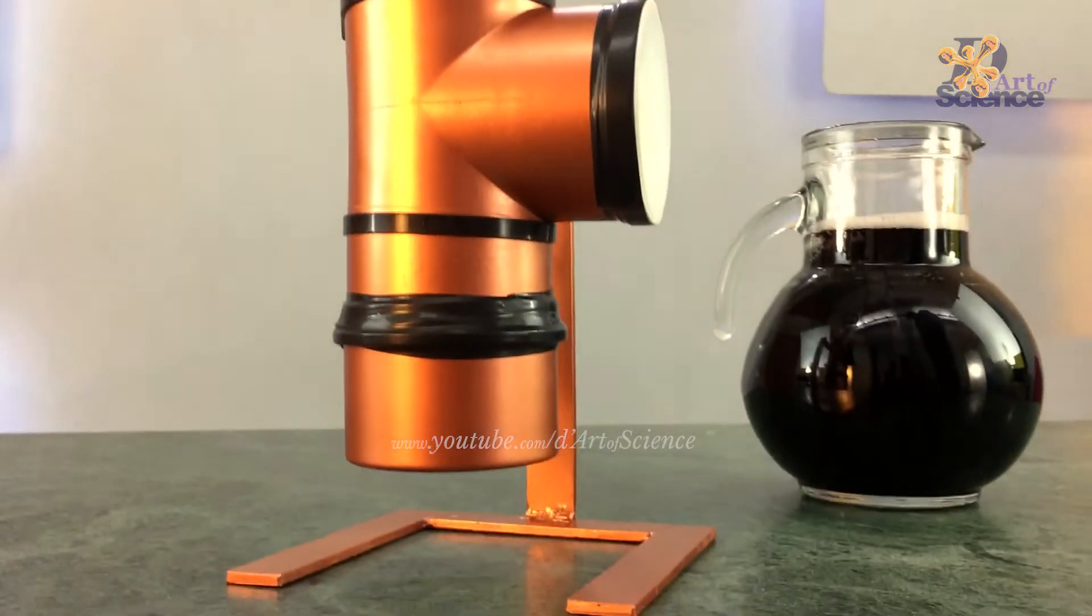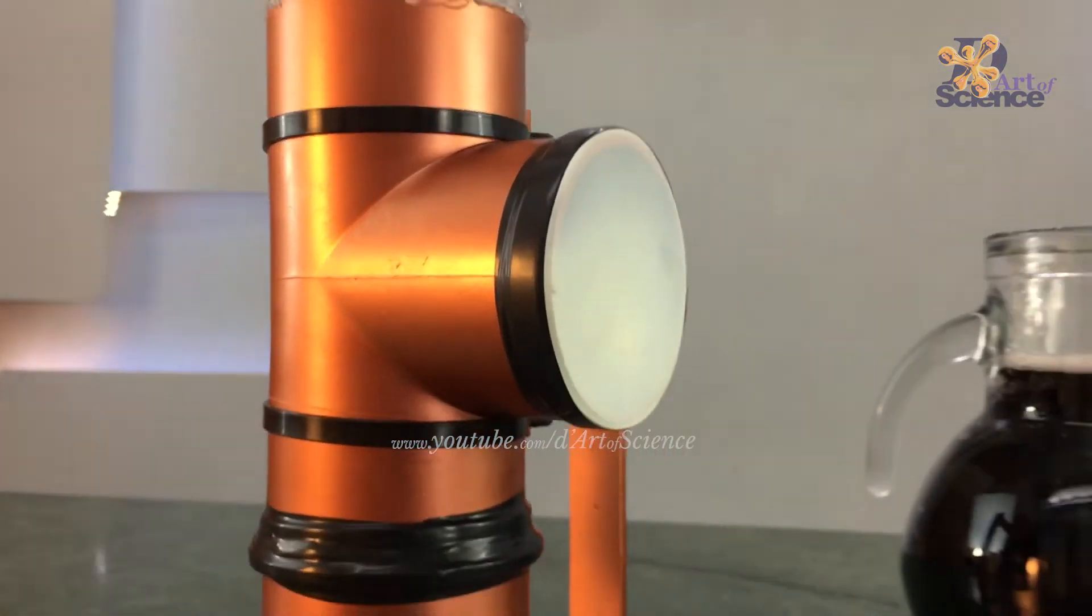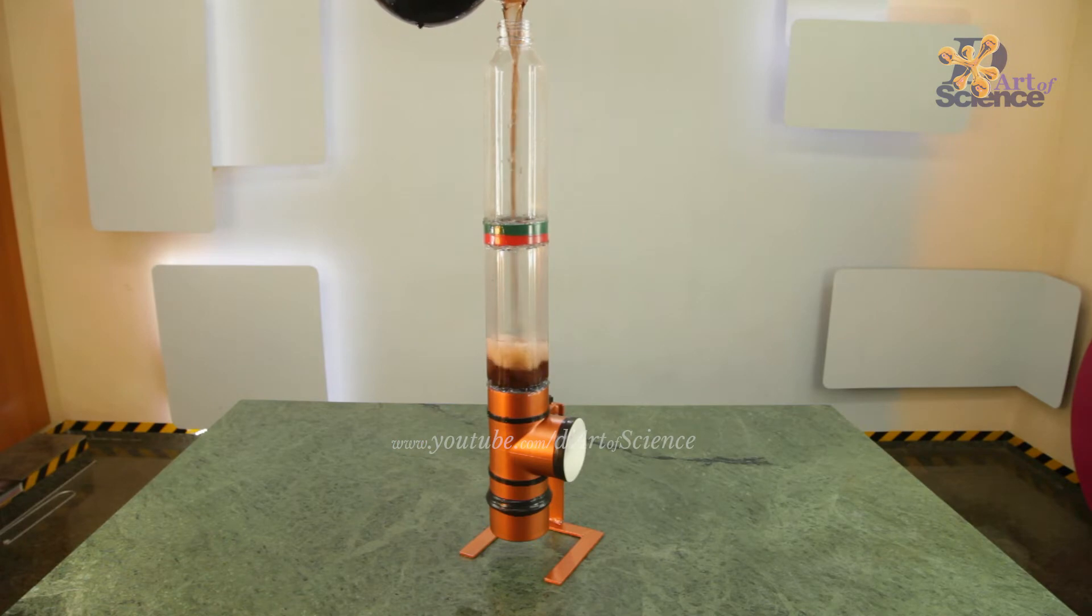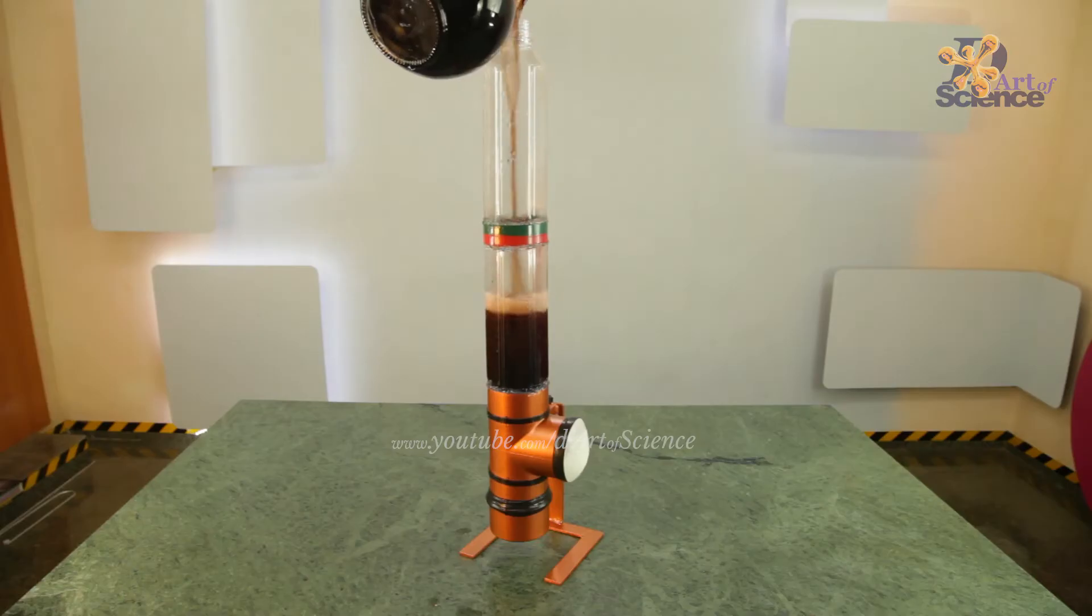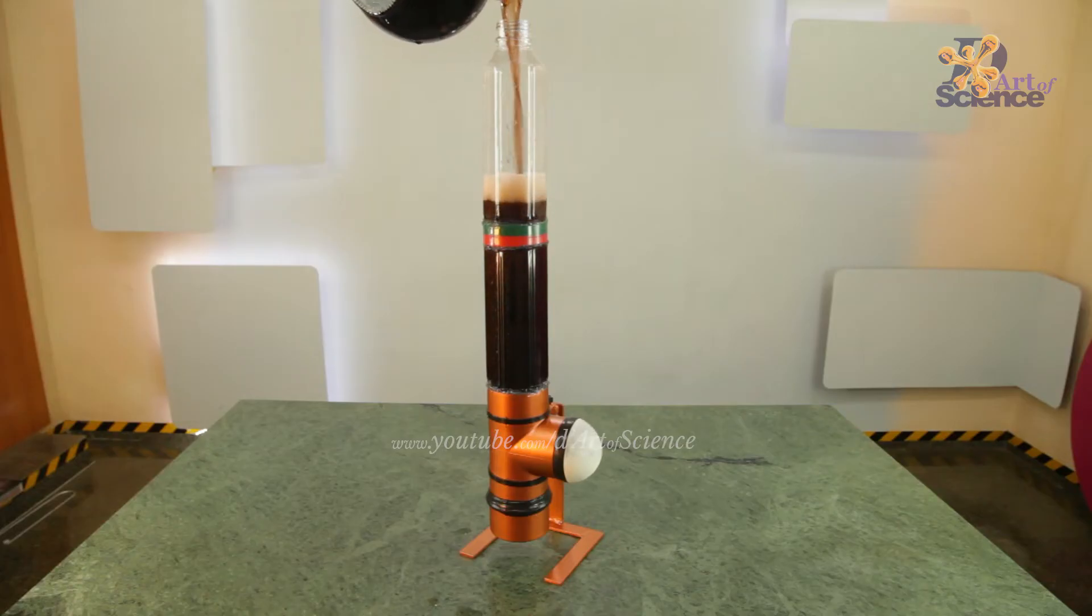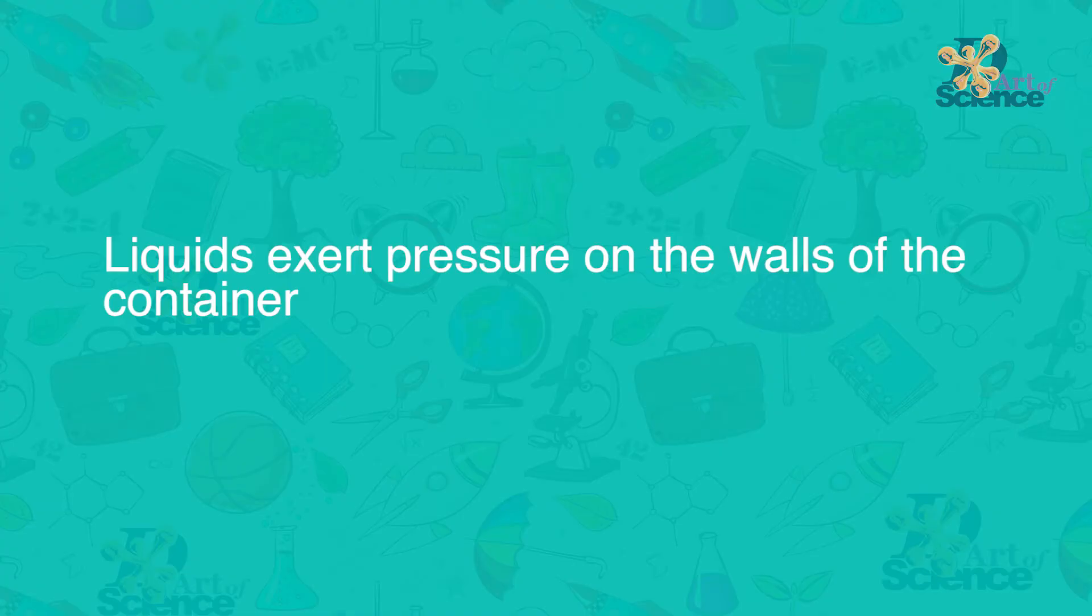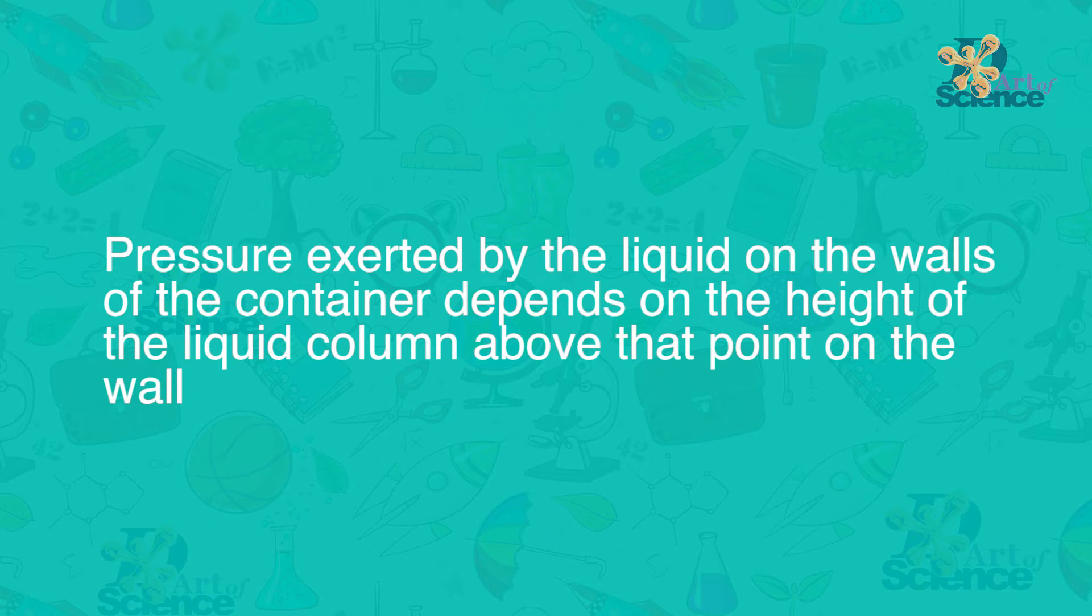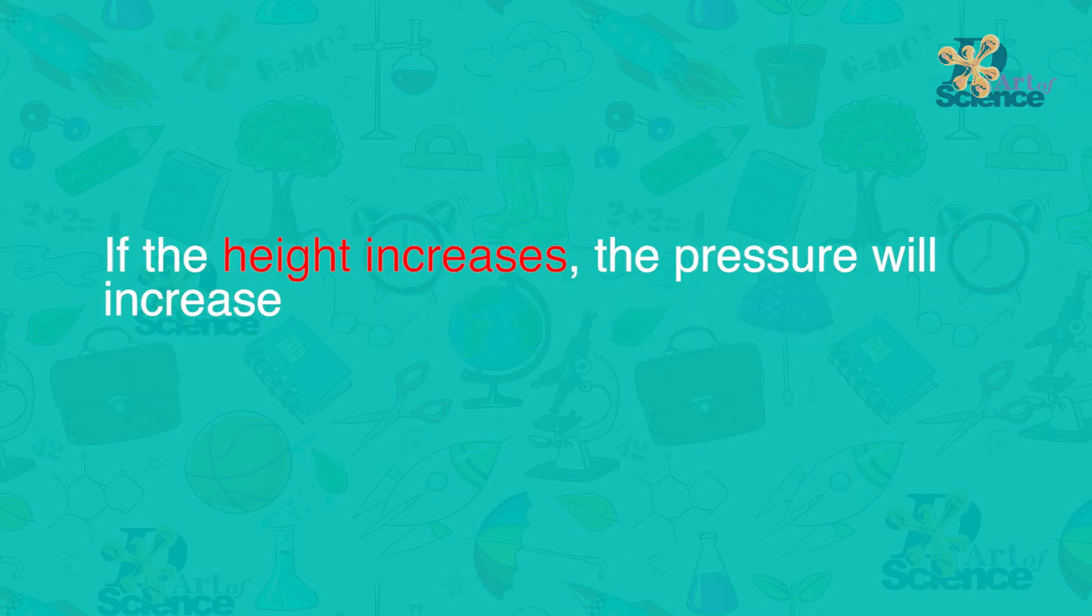This is the other experiment. Here, the same balloon that's blocking the hole is on the side. Once again, as we start putting the water in it, we can see that the balloon starts bulging out and once we have put enough water, it has bulged out quite a bit. So now if we increase the water in the tube, the bulge increases. This experiment also shows two similar things. Firstly, that the liquids exert pressure on the walls of the container. Secondly, pressure exerted by the liquid on the walls of the container depends on the height of the liquid column above that point on the wall. If the height increases, the pressure will increase.